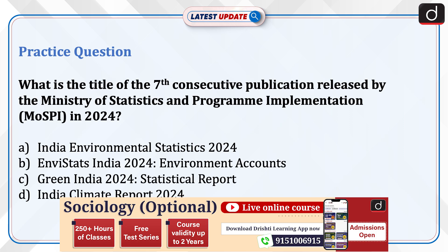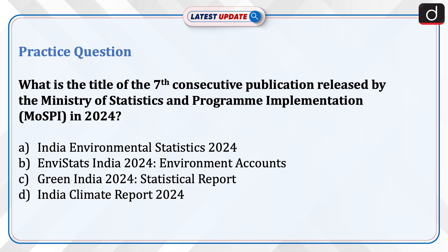Practice question: What is the title of the 7th consecutive publication released by the Ministry of Statistics and Program Implementation in 2024? Options are: India Environmental Statistics 2024, NVStats India 2024 Environment Accounts, Green India 2024 Statistical Report, or India Climate Report 2024. Send us the answer in the comment section.